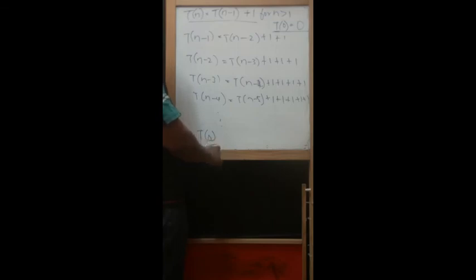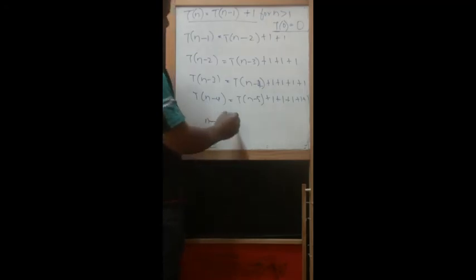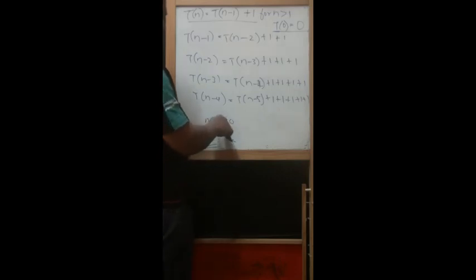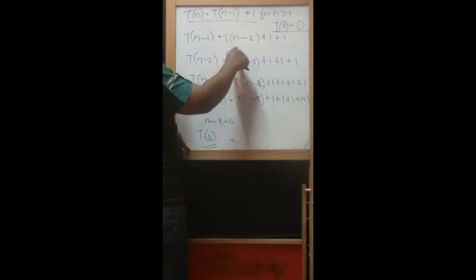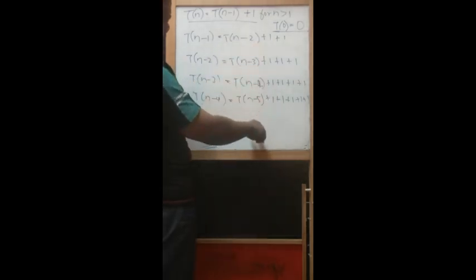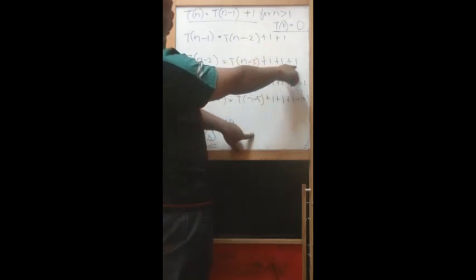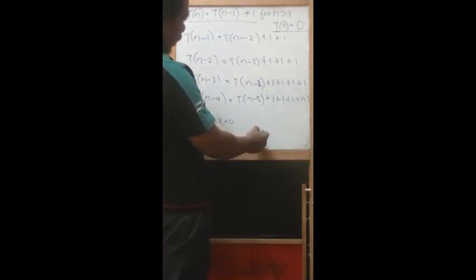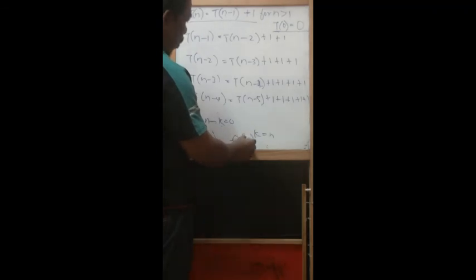We continue until the stopping criteria T(0), meaning N equals 0. So N minus K equals 0. Let the number of steps increase until K. That means N minus K equals 0, so K equals N. You can see the pattern — the number of additions increases: K equals 3, K equals 4, K equals 5, until K. The pattern shows K equals N, meaning N times. So we can conclude this ends up with O(N).